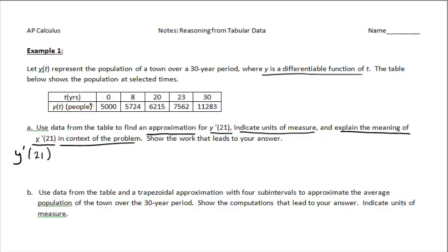I don't have an equation for Y that I can differentiate and evaluate at 21. So the best I can do is locate the year 21, find out between what two time values it falls, and use those two ordered pairs to calculate the average rate of change. This is approximately — be mindful of that. If you're approximating, use the approximate symbol.